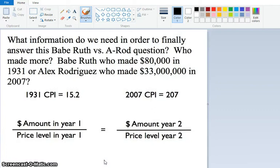Now, your job is this guy. So try to do it both ways. See what Alex Rodriguez's $33 million was worth back in 1931. And see what Babe Ruth's $80,000 was worth in 2007.